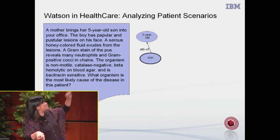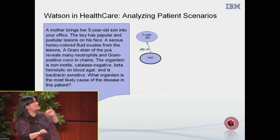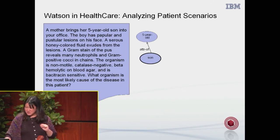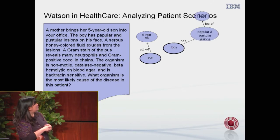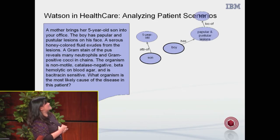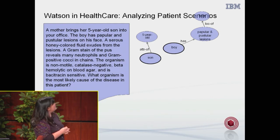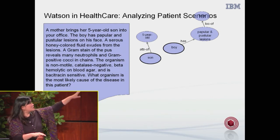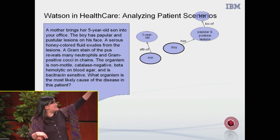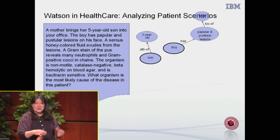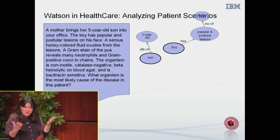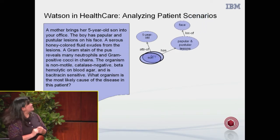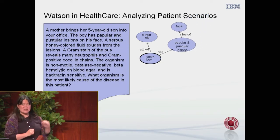So after the first sentence, we look at it and say, okay, there's a son here and the son is five years old. Then we look at the next sentence: the boy has papular and pustular lesions on his face. So now you get another sentence saying the boy has these lesions which are on his face. Now are we talking about two people or one person? We need to know that the boy is actually the same as the son, so we need to merge those.